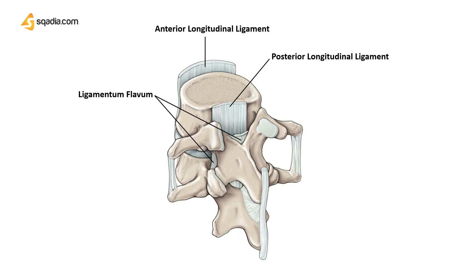Ligamentum flavum is attached throughout the vertebral column to the lamina posteriorly and provides stability to the vertebral column. The intertransverse ligament is attached to the transverse processes of the corresponding vertebrae in a longitudinal manner, again maintaining flexibility and allowing a range of movements.